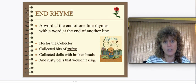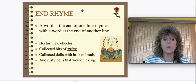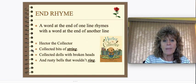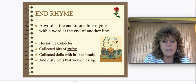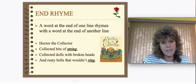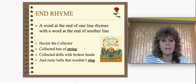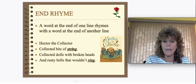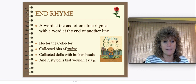End rhyme is when a word at the end of one line rhymes with the word at the end of another line — they don't have to be adjacent. Here's an example: "Hector the collector collected bits of string, collected dolls with broken heads and rusty bells that wouldn't ring." You can hear the meter — it's got a definite meter. But notice only string and ring rhyme; the other endings don't have to. That's an example of what's called end rhyme.